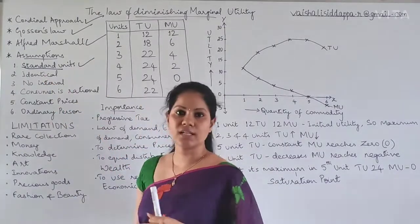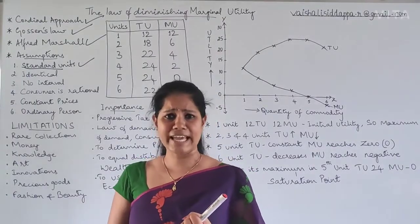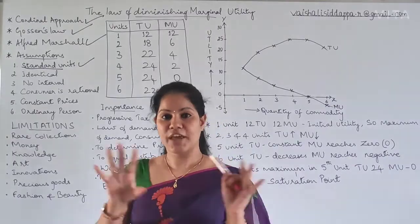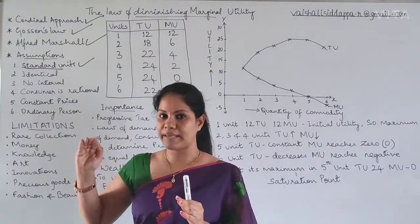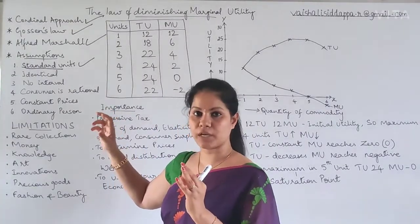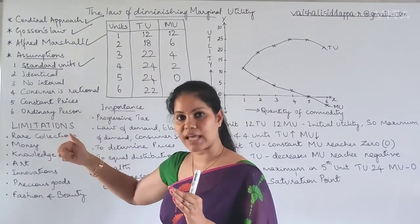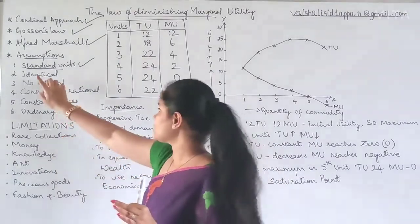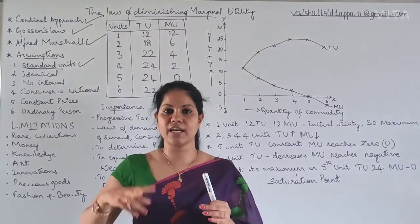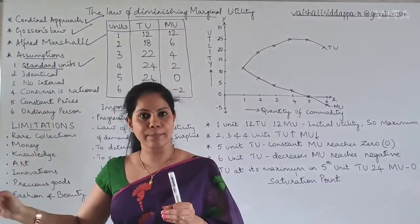The next assumption: the good should be identical — same in taste, smell, and size. Each and everything should be the same. This point talks about being homogeneous — exactly the same. If I am eating the first apple, the second and third fruit I eat should also be apple only.